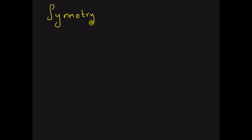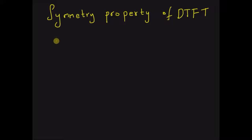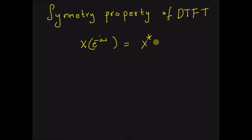Hello, welcome. In this short video, let us look at the symmetry property of DTFT. The main symmetry property can be defined as the DTFT when omega is replaced by minus omega, that is X(e^{-jω}) is equal to the conjugate of the original DTFT.